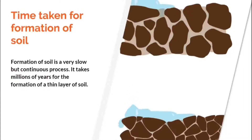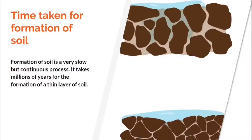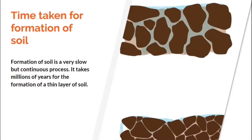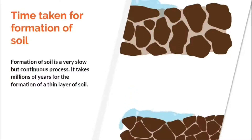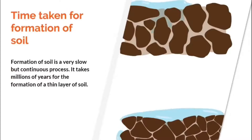Some of these rock pieces get carried away by rivers over long distances. In this process, they get pushed against each other and become smaller and smaller. Finally, when they mix with organic decaying matter — dried leaves, fallen trees, or dead animals — their remains change into soil. This process takes place continuously in nature, but it is very slow, taking millions of years just to form one inch of a soil layer.